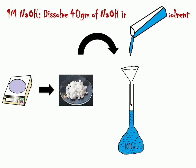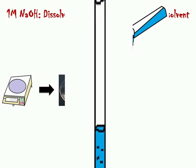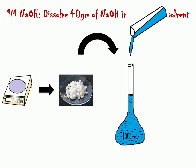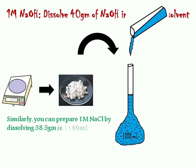You will get one molar NaOH solution. Similarly, you can prepare one molar sodium chloride solution by dissolving 58.5 grams in 1000 ml of solvent.